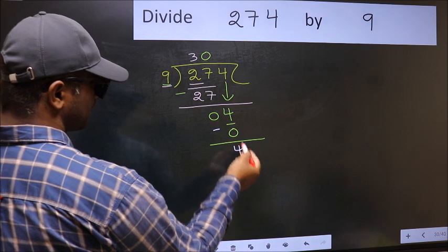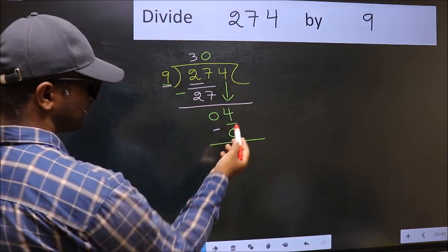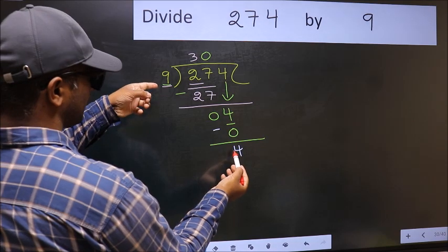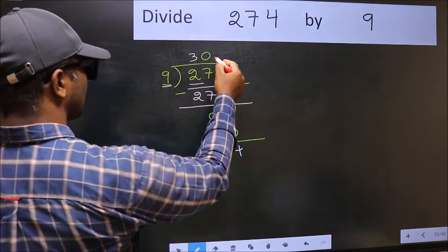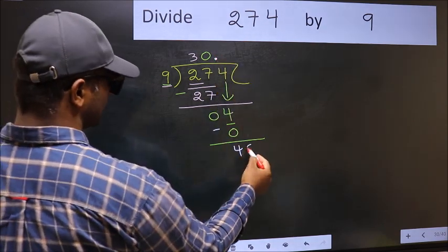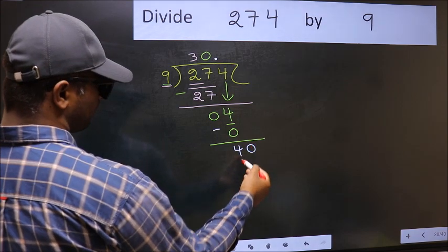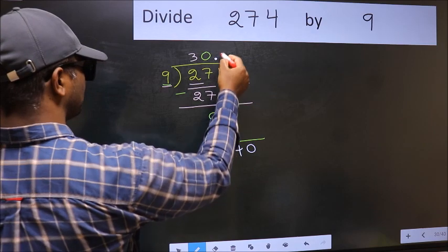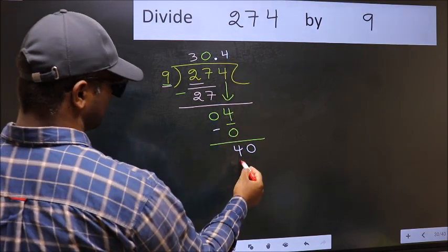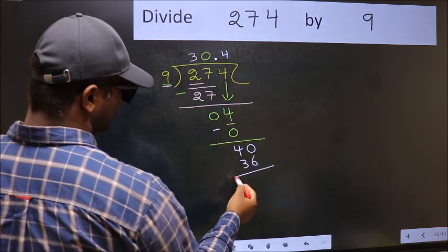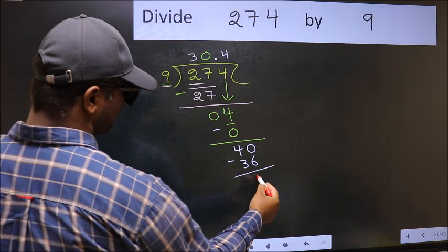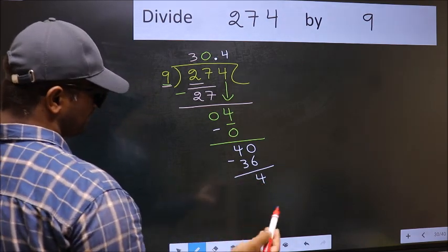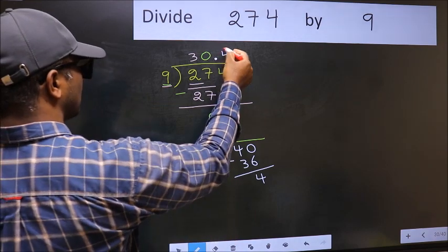Over here, we did not bring any number down, and 4 is smaller than 9. So now you can put dot and take 0. So 40. A number close to 40 in 9 table is 9, 4, 36. Now you should subtract. We get 4. We got 4 again. That means we get bar on this number.